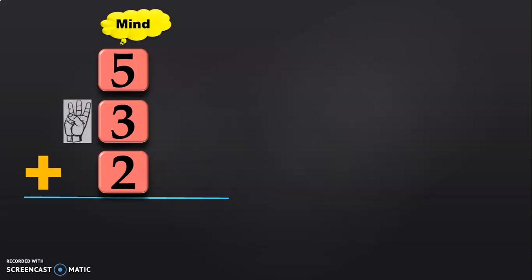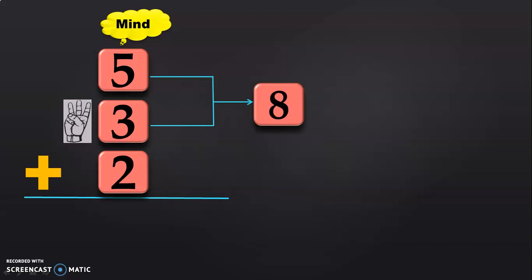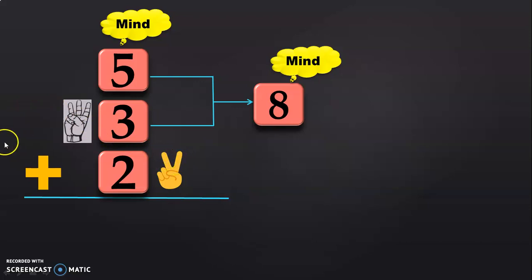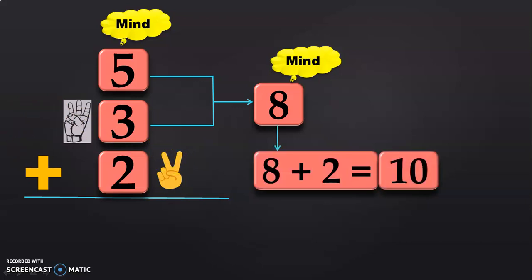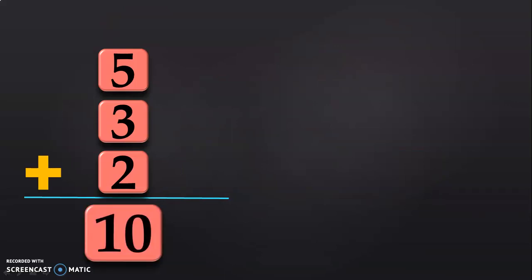Now, we have to add 5 plus 3 plus 2. First, keep 5 in the mind and 3 in the fingers. After 5, count 6, 7, 8. So, 5 plus 3 will give you 8. Now, we have to add 8 plus 2. Keep 8 in the mind and 2 in the fingers. After 8, you will get 9, 10. So, 8 plus 2 will give you the answer 10. The sum of the three numbers 5 plus 3 plus 2 will give you the answer 10.